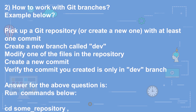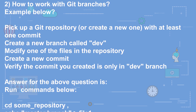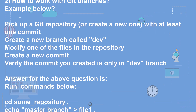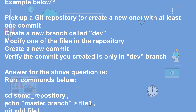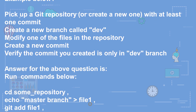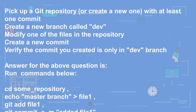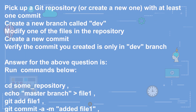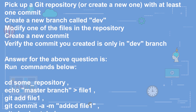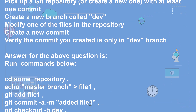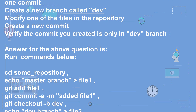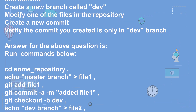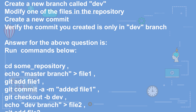Answer: Run cd some_repository, then echo 'master branch' > file1, git add file1, git commit -m 'added file1'. Then git checkout -b dev, echo 'dev branch' > file2, git add file2, git commit -m 'added file2'.